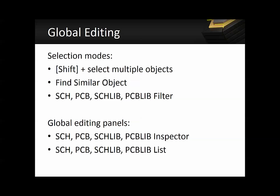You can also do a right-click on an object and then click on Find Similar Objects. If you'd like to perform a more advanced and complex query on the design, you can also make use of the schematic, the PCB, the schematic lib, or the PCB lib filter. Once you have selected the multiple objects, we can then use the global editing panels to edit them.